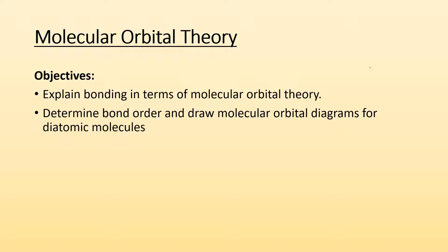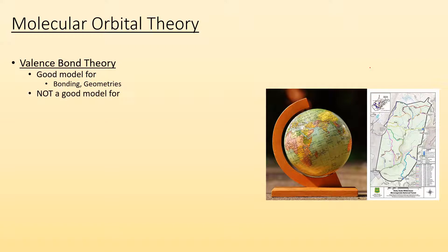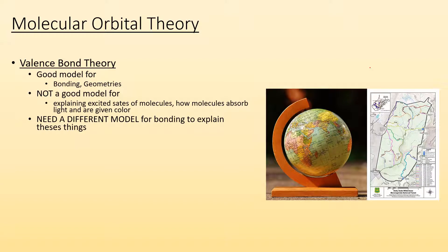Remember, diatomic molecules just mean two-atom molecules. We've been talking about valence bond theory, and it's a good model for bonding and geometries of molecules. But what it's not good at is explaining excited states of molecules. Atoms can become excited with atomic orbitals, but molecules can also become excited, and valence bond theory doesn't explain that at all — or how molecules absorb light and are given color. So valence bond theory comes up short for those things. We need a different model for bonding to explain how these things happen.